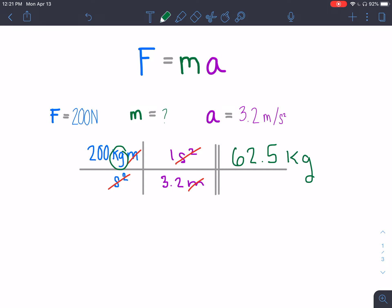Okay, so that's how the units end up working out. You can also solve this problem by taking your force and dividing it by acceleration. And that would also give you the 62.5 kg.